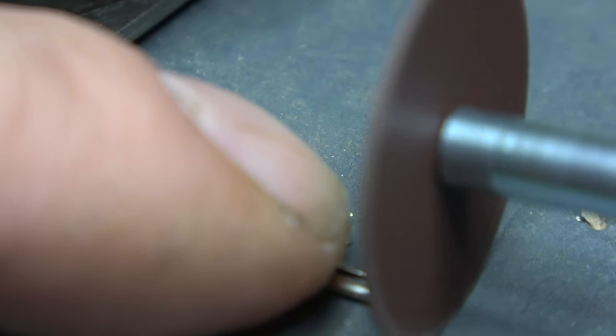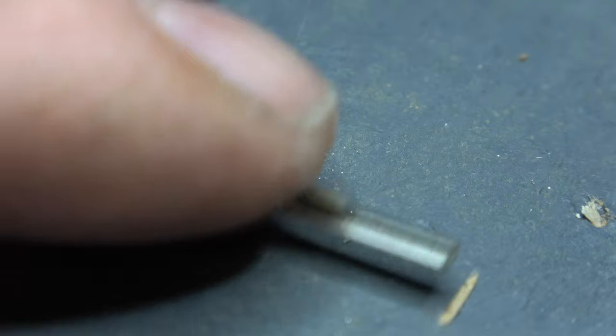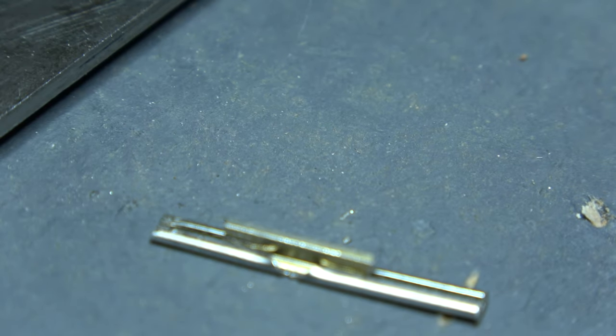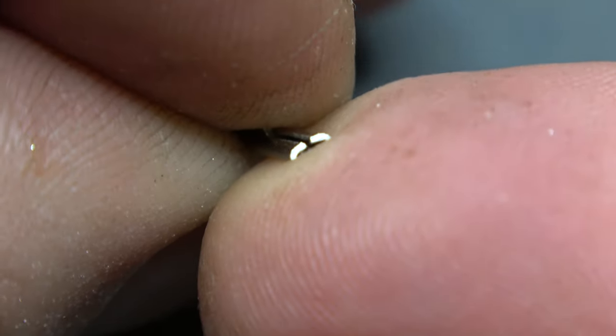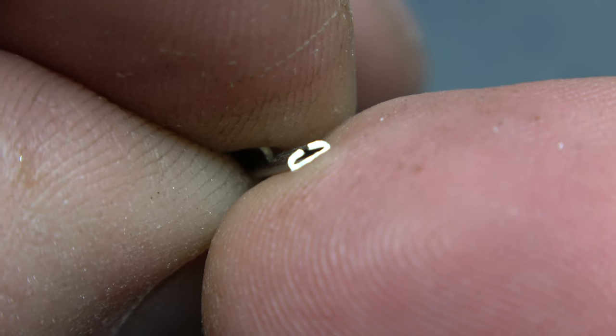I then chopped the other side of the rail joiner in half and prised the gap open again using the same method as before. We're now ready to install.